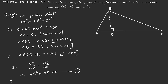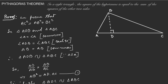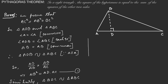Similarly, triangle BDC is similar to triangle ABC. If these two triangles are similar, then their sides are proportional. That means CD over BC equals BC over AC, which implies BC square equals AC times CD. We take this as equation number 2.